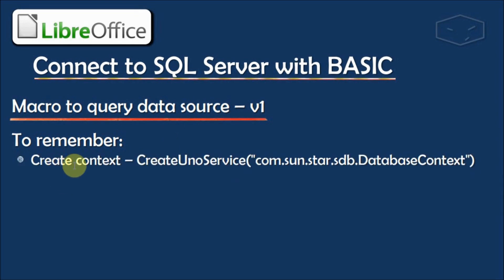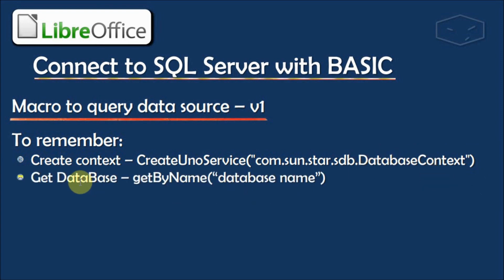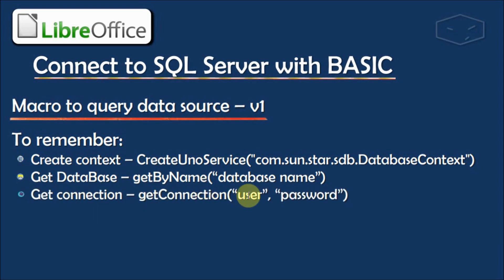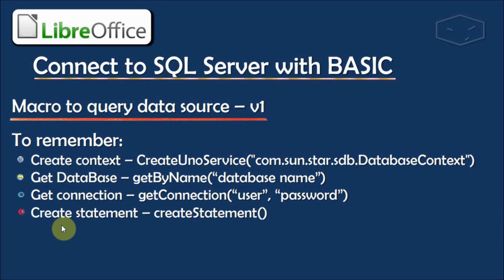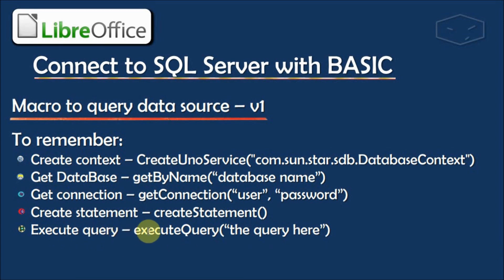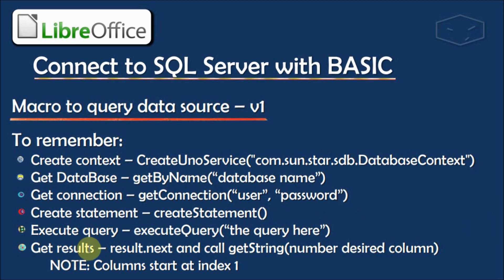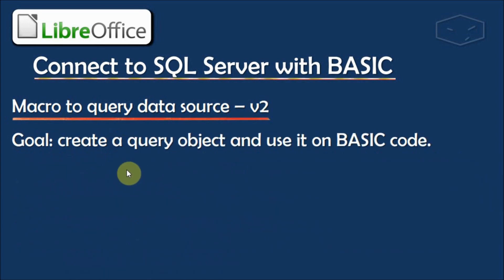To recap: to create the context, call createUnoService passing the string com.sun.star.sdb.DatabaseContext. Then get the database with getByName, passing the name we gave in data sources — not the SQL Server database name. Get a connection with getConnection, passing user and password (empty strings if none). Create a statement, then execute the query with executeQuery. Read results using result.next() and call getString, passing the column number. Note: columns start at index 1.